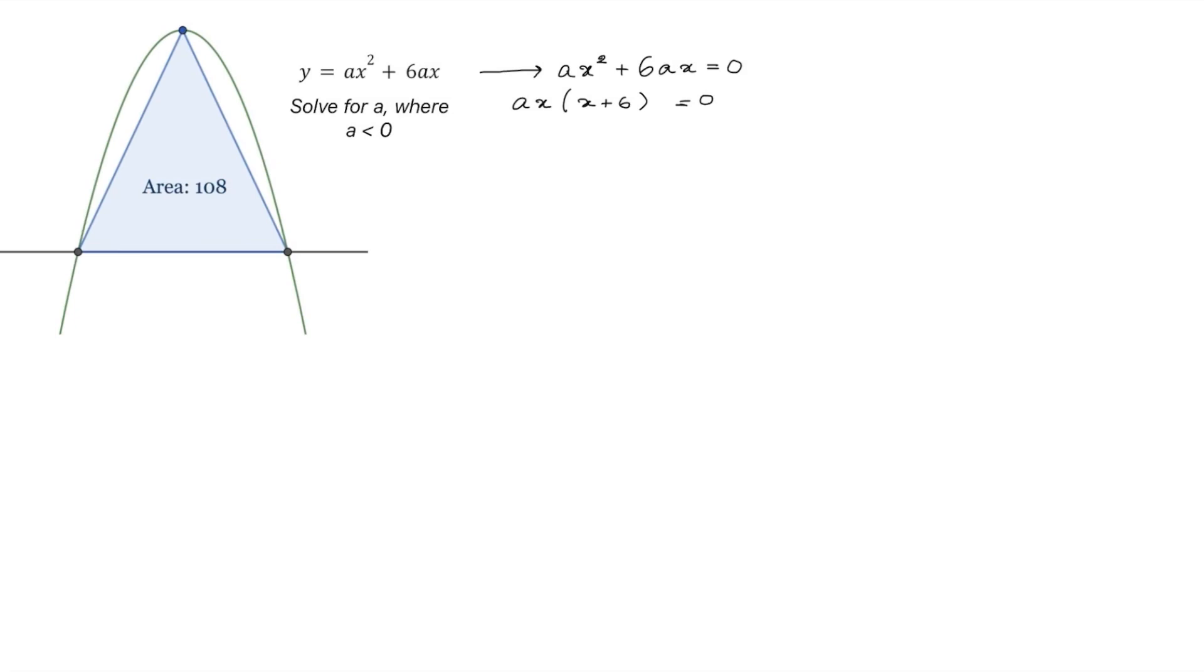Here we'll now have the two possibilities that will result in our two roots. Either ax equals 0, in which case x equals 0, or x plus 6 equals 0, in which case x equals negative 6. And these will be the two roots for our parabola.